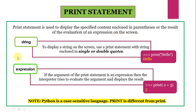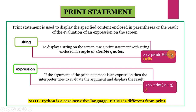Suppose I want to display a string using Python on the screen. To display a string we will use a print statement with the string enclosed in single or double quotes. So to display hello on the screen, I will give the print statement: print, and then within parenthesis the hello string enclosed in single quotes. You can also enclose it in double quotes.